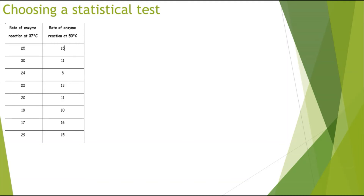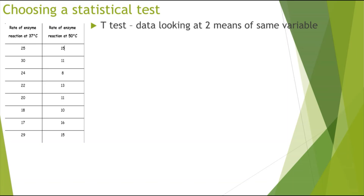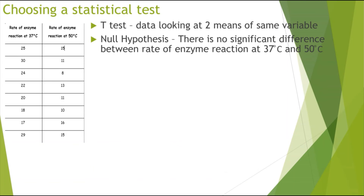In this case, there are two groups of data and the same variable has been changed — the temperatures: 37 and 50 degrees. So the test I would carry out would be the t-test because I'm looking at two means with the same variable, getting the mean rate of enzyme reaction. The null hypothesis would be that there is no significant difference between the rate of enzyme reaction at 37 degrees and at 50 degrees.